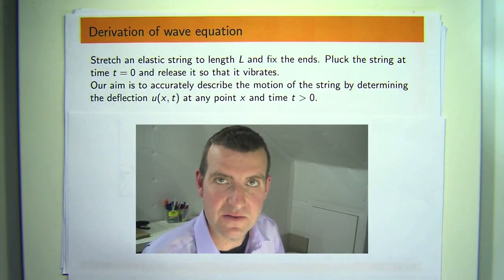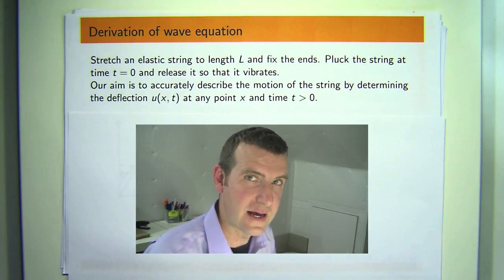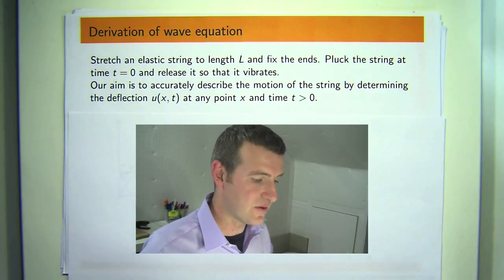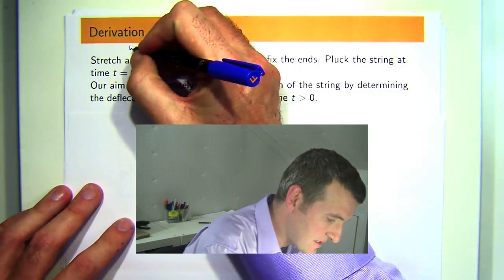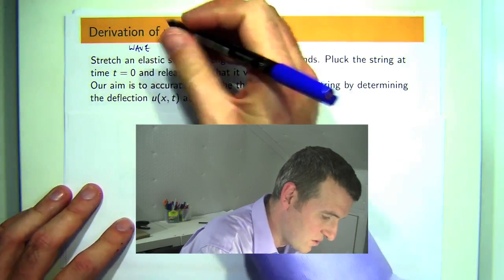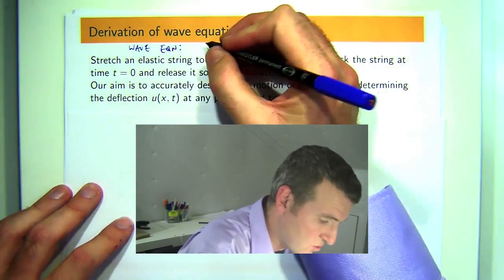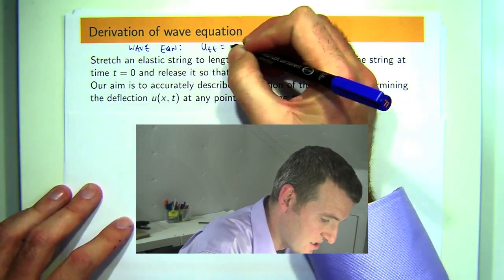In previous videos, we've shown how to build a general solution and also how to incorporate initial velocity and initial position together with the wave equation. Let's just remind ourselves of what the basic wave equation in one spatial dimension is.